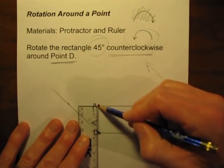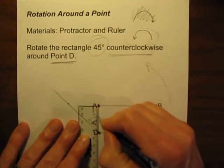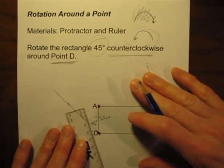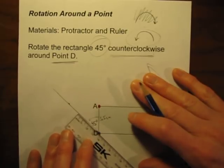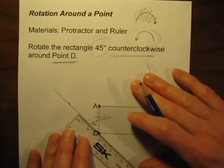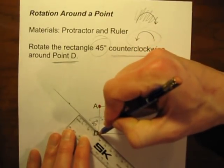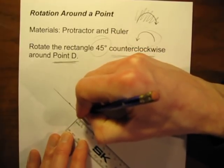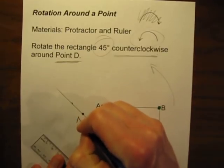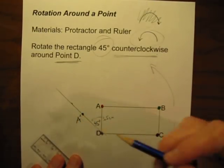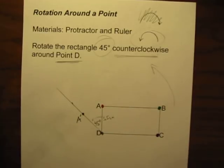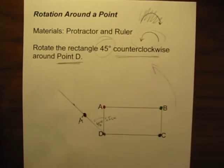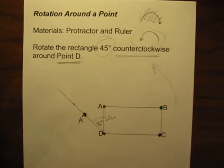When I measure from D to A, it looks like it's 3.5 cm. So when I measure over on our new line, the new point A is going to fall that exact same distance from point D — 3.5 cm. And that right there is going to be my new point A, technically called A prime. The red point A goes over to our new red point. We just moved A over 45 degrees counterclockwise.